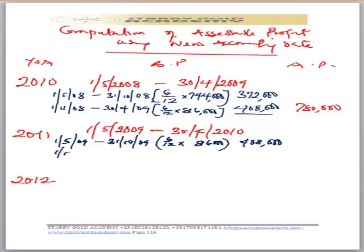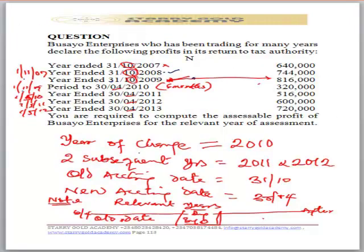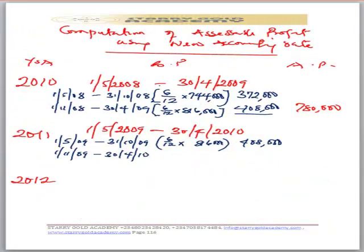From 1st May 2009 to 31st October 2009, I can pick six months out of twelve times 816,000 — we've just done that, which is 408,000. The remaining period I need is 1st November 2009 to 30th April 2010. Going back to the question, we have this starting in November and ending then — that is exactly the period I need. That period is also made up of six months, so the six-month profit gives 320,000. Adding up gives 728,000.